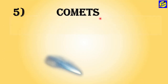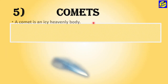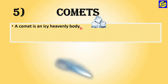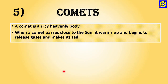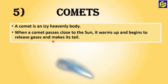Comets. A comet is an icy heavenly body. When a comet passes close to the Sun, it warms up and begins to release gases, which form a tail. As you can see, this is a comet and it has a wonderful tail. When it comes near to the Sun, it warms up and begins to release gases, and these gases form its tail.